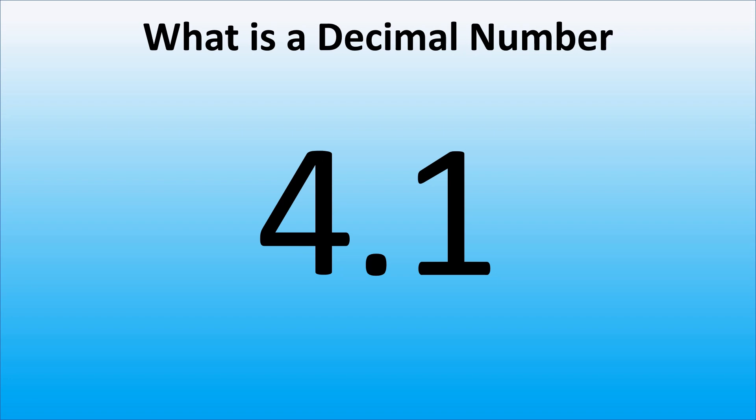4 and 1 tenths is a decimal number. How do we know it? It is because in a decimal number we have two or more digits separated by a decimal point. A decimal point is usually written as a point or a dot. However, sometimes a comma is used as well. We will use a dot as a decimal point in this video.